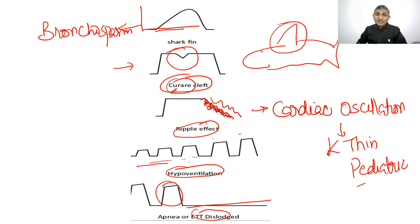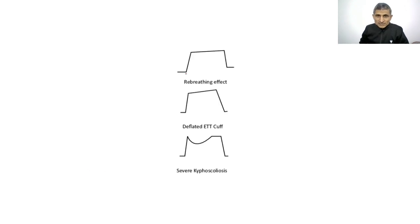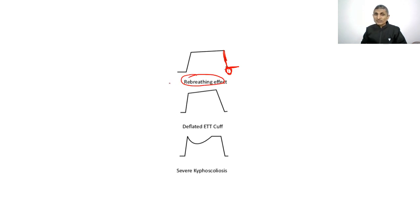If the endotracheal tube is accidentally placed in the esophagus, you will get a flat/straight line capnograph. Re-breathing appears when the inspiratory part does not return to baseline, meaning some CO2 is present — the patient is breathing CO2. A deflated endotracheal cuff also produces a characteristic capnograph pattern.